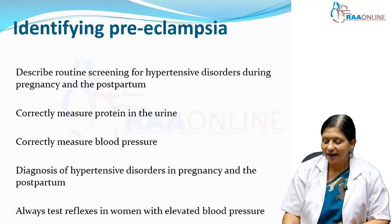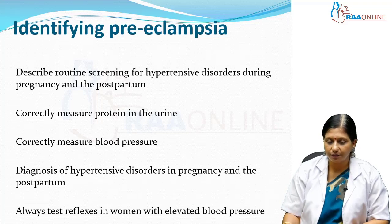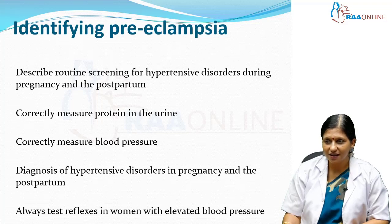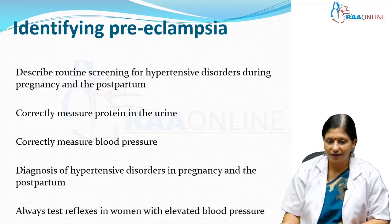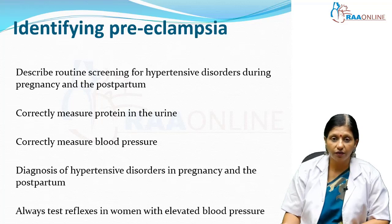To identify pre-eclampsia in a woman who comes to the OBG OPD: first, correctly measure blood pressure; second, correctly measure protein in the urine; third, perform routine screening — every pregnant woman should be screened for pre-eclampsia. Always test reflexes, because if reflexes are exaggerated, the patient may have a chance of throwing a fit.